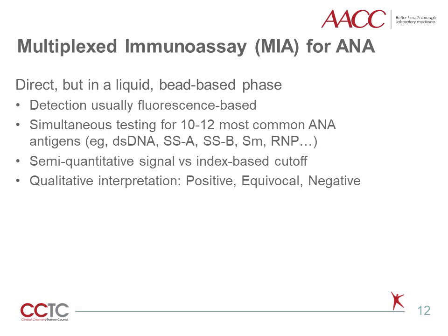ANA testing evolved again in the early 2000s with multiplexed immunoassay, or MIA, approaches. MIA uses all the same ideology as ELISA, but advances the technique by presenting epitopes on beads that are individually detectable on the analytic system. Where ELISA-based testing would require a separate batch for each epitope, MIA-based testing can cover most or all epitopes in a single test batch. Most MIA for ANA include 10 to 12 of the most commonly detected subserology antigens. MIA reports are typically qualitative, with index-based cutoffs driving the interpretation.